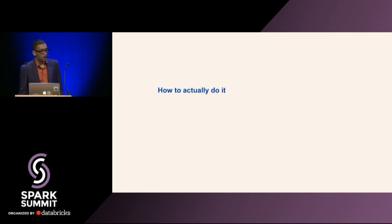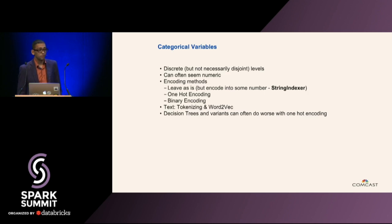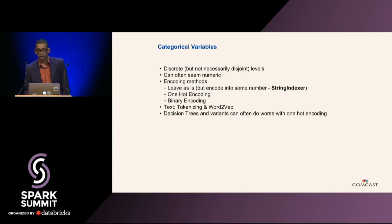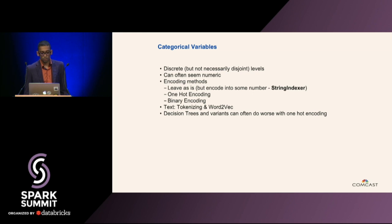So let's get to the meat of the matter — how you actually do feature engineering. First I'm going to define two kinds of variables: categorical and numerical. Categorical variables are pretty much exactly what they sound like — defined categories for certain things, like hair color: red, green, blonde, indigo, black. These things typically tend to be discrete, but not necessarily disjoint. Some categories can be combinations of other categories. They can often seem numeric — a common problem is that people look at serial numbers and think of them as numeric variables. One way to tell the difference is to understand if taking the average or doing arithmetic still retains the same semantic meaning.